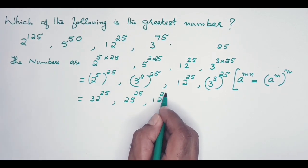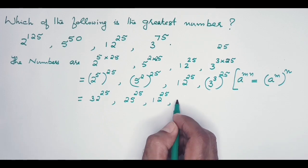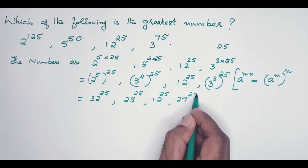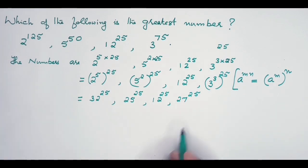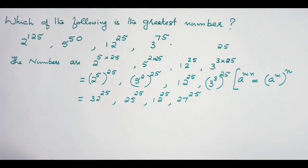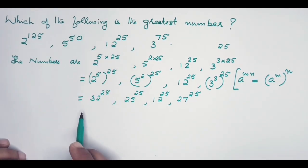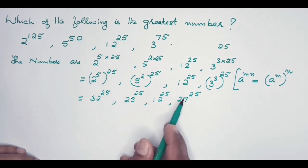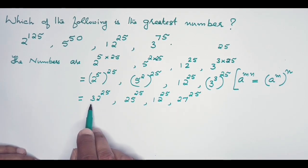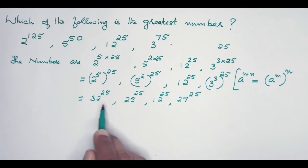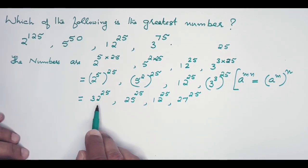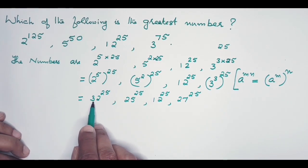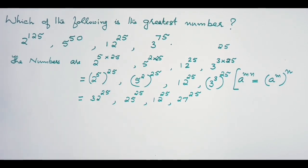Now we have written all the four numbers given for comparison like this, where you see the exponent being the same, which is 25. So whichever has the highest base figure will be the highest. So among the four numbers—32, 25, 12, 27—32 is the highest.